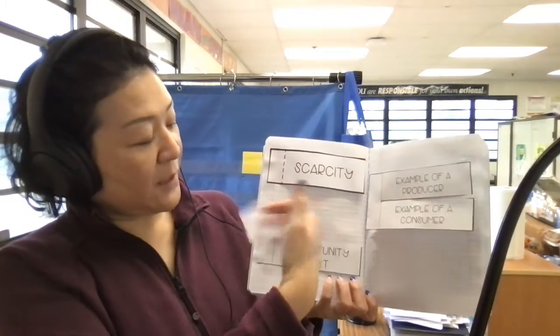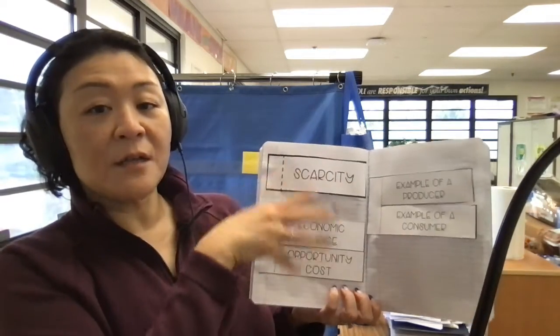Then scarcity along with economic choice and opportunity cost on the same page.